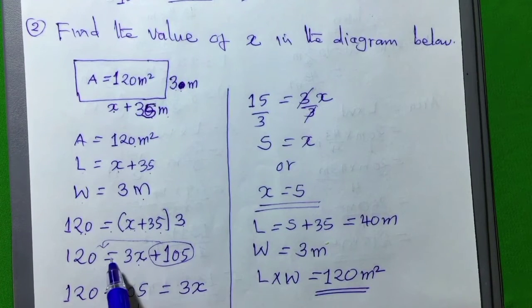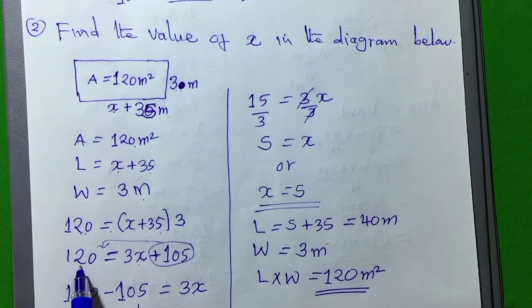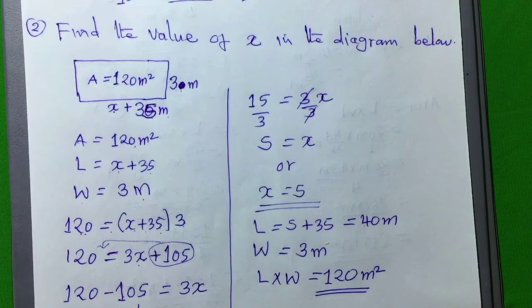Let's take this value of 105 to the other side, it will be negative. This sign will change when it crosses the equal sign. It will automatically change the sign. This sign belongs to 105, then it will become negative. So, 120 minus 105, we will get only 15.